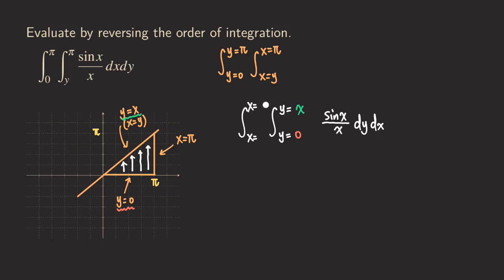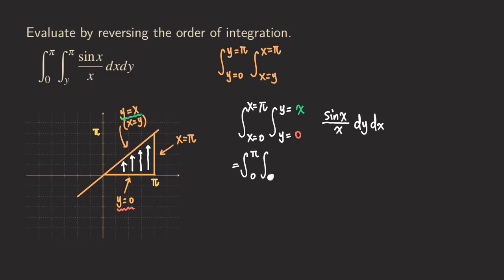For the outer integral limits, those are constant — we go from the leftmost point to the rightmost point of the region. The leftmost point is x equals zero and the rightmost point is x equals pi. So the full reversed integral is: integral from 0 to pi of integral from 0 to x of sin(x)/x dy dx.